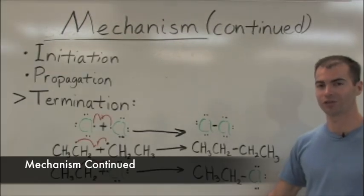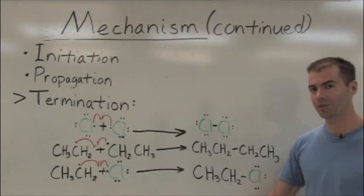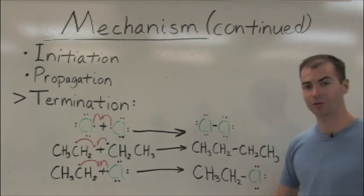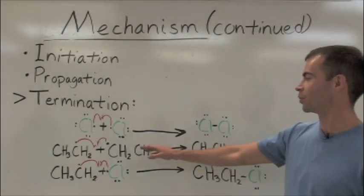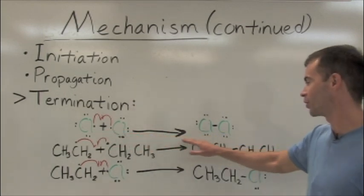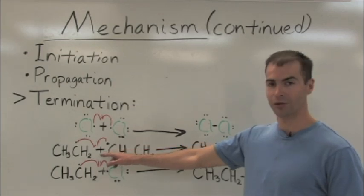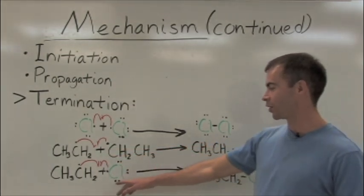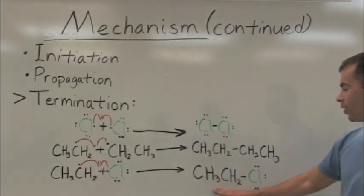Now we have the termination stage. In termination, two radicals come together to form a sigma bond. Three possible means of this occurring are as shown. Two chlorine radicals can react to form a chlorine molecule. Two ethyl radicals can come together to form butane. And we have the ethyl radical and chlorine radical combining to form ethyl chloride.